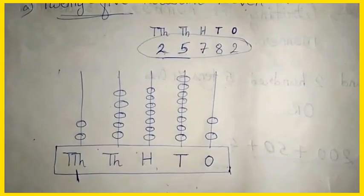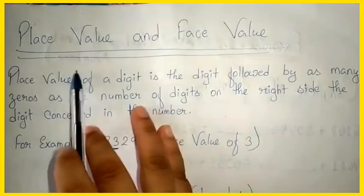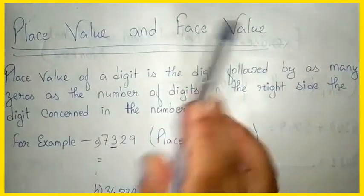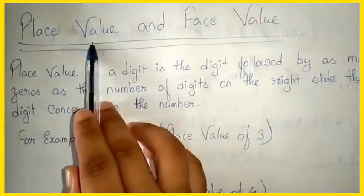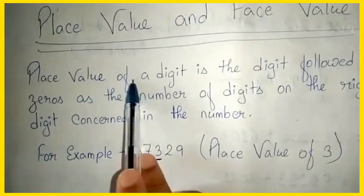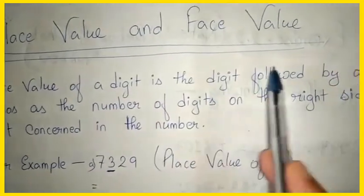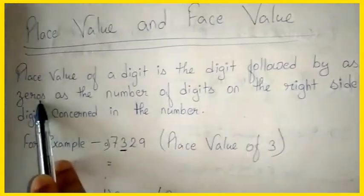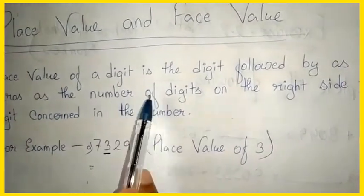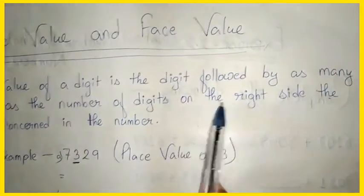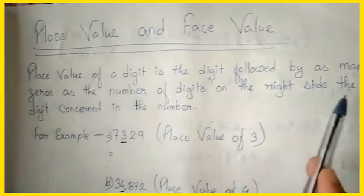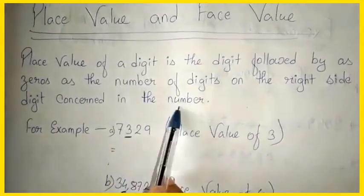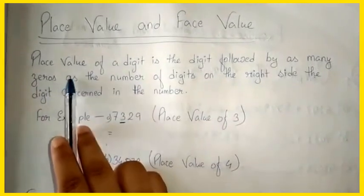Now let us move to place value and face value. First, let us learn about place value. The place value of a digit is the digit followed by as many zeros as the number of digits to its right in the number.